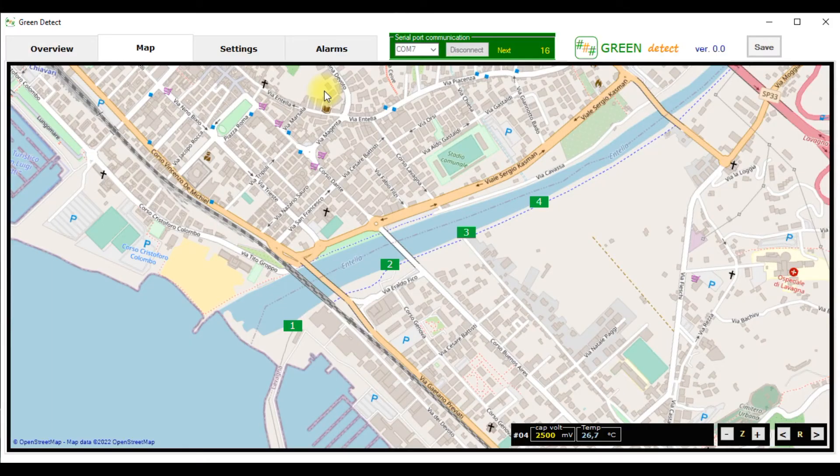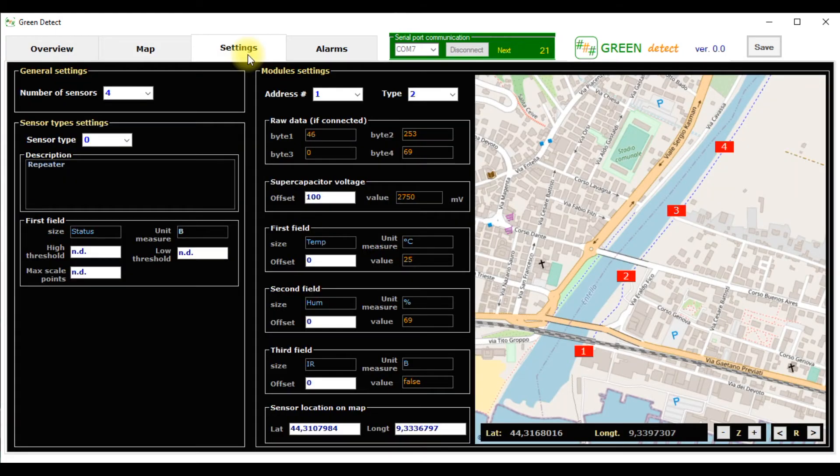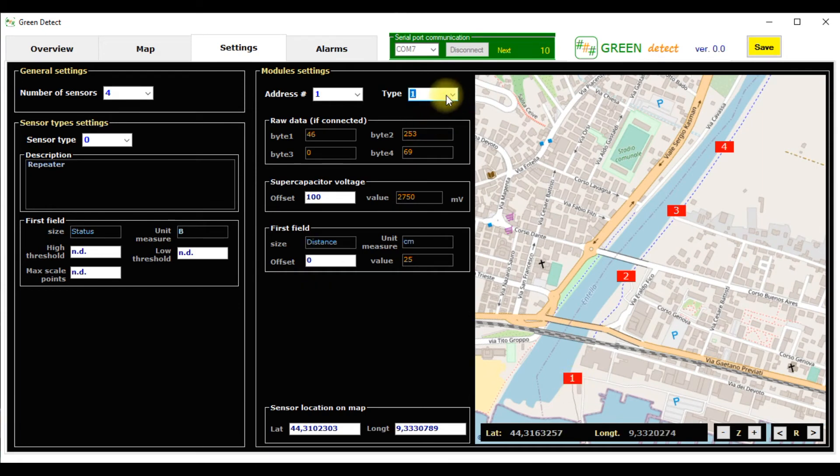The Supervision Windows open source application was created with Visual Studio in Visual C-sharp language. The software allows you to set the sensors by defining the number, type, alarm thresholds and position on the map.